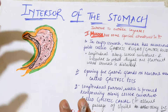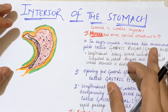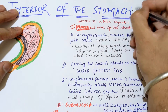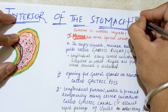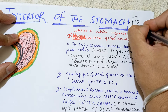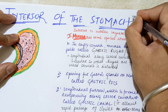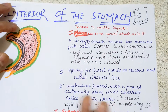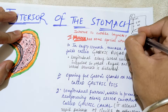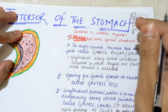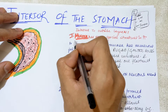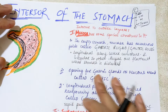Let's start with the interior of the stomach. Interior means the layers or membranes of the stomach from inside to outside. In every organ we have four layers: mucosa, submucosa, muscular, and serosa — the peritoneal covering. These four layers are common for every parenchymal organ.